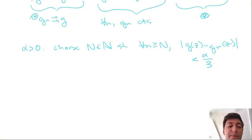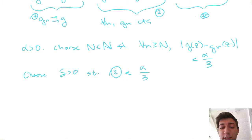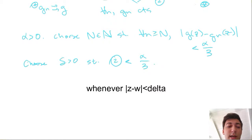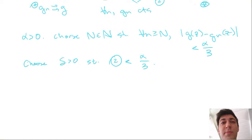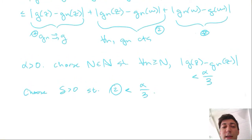And then for the same thing here, we can choose delta greater than zero, such that this Gn difference up here, I'll call this maybe two, such that two is less than alpha over three as well. So then all we have to do is, well, just to be safe, we would pick a minimum between the delta and the epsilon. But once we've done that, and we've picked our N far enough along, then we have that this expression above is really less than, like I said, the sum of these alpha over threes.